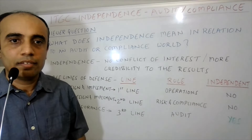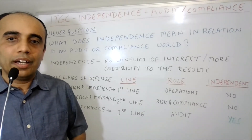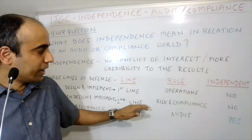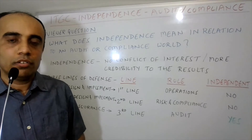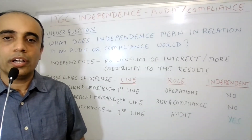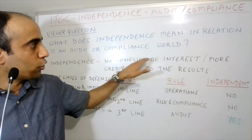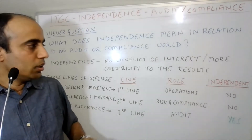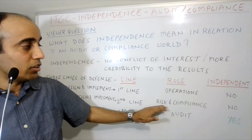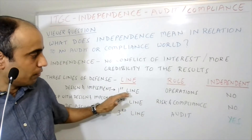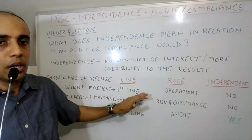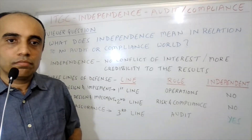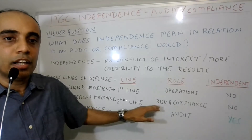This is an important concept, because as the second line — like IT compliance — helps the first line in the design and implementation, the second line cannot be fully independent. The reason they are not fully independent is because they have played a role in setting it up, so there is automatically an element of conflict of interest. When we talk about independence from an audit lens, there is lesser or no complete independence in the second layer, because they were part of the function that helped set it up. We cannot call the second line an independent layer or independent function.